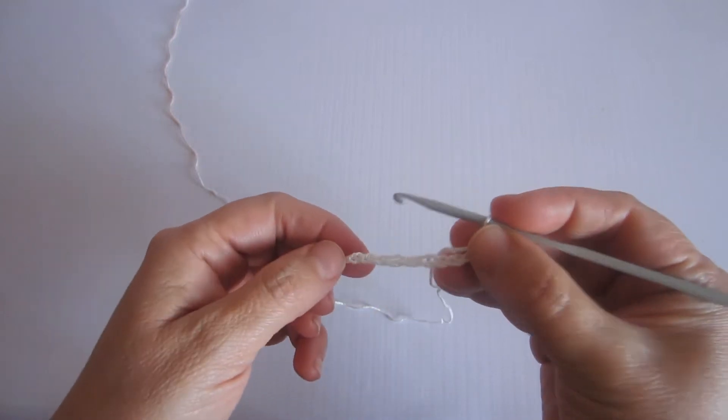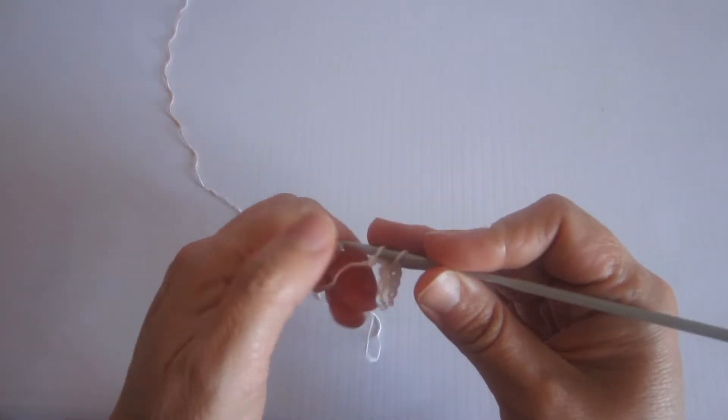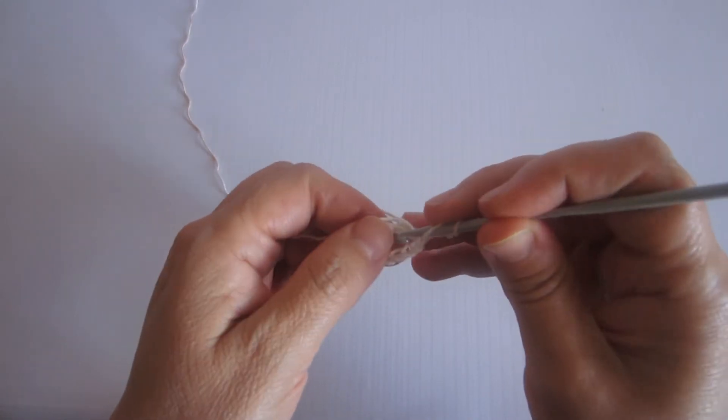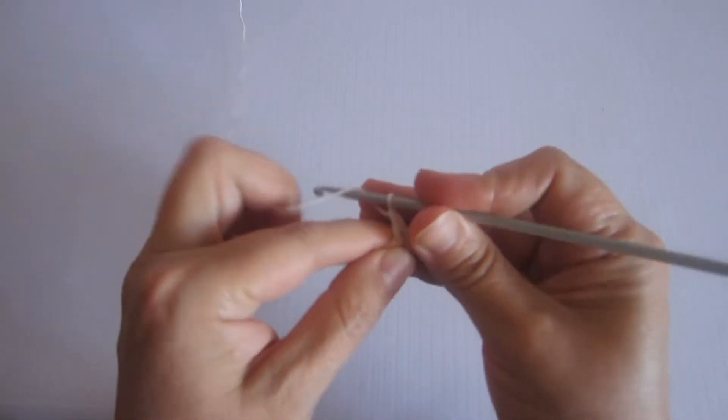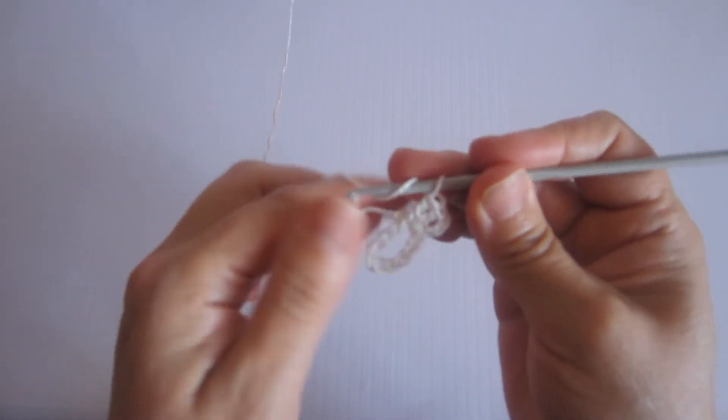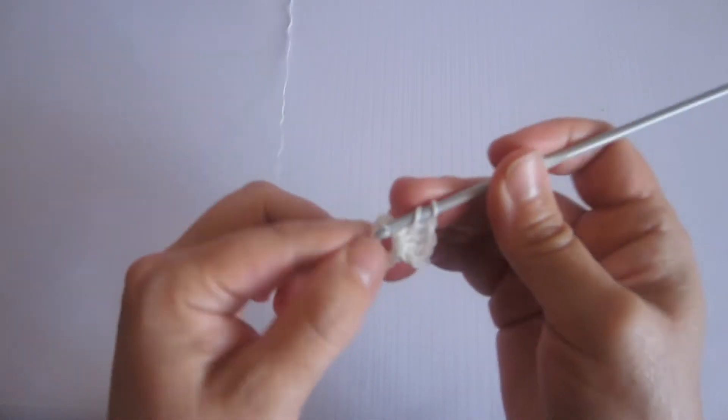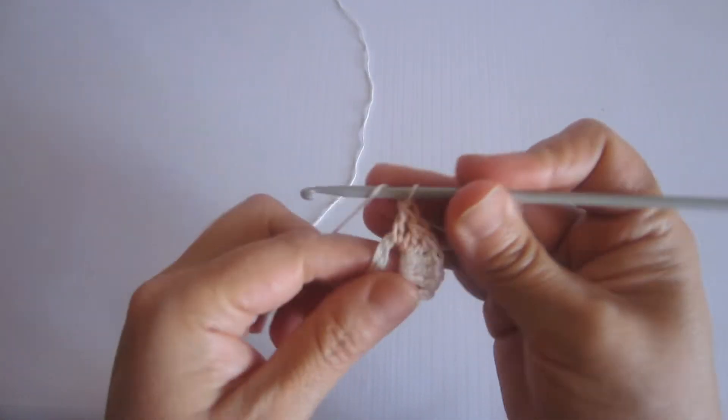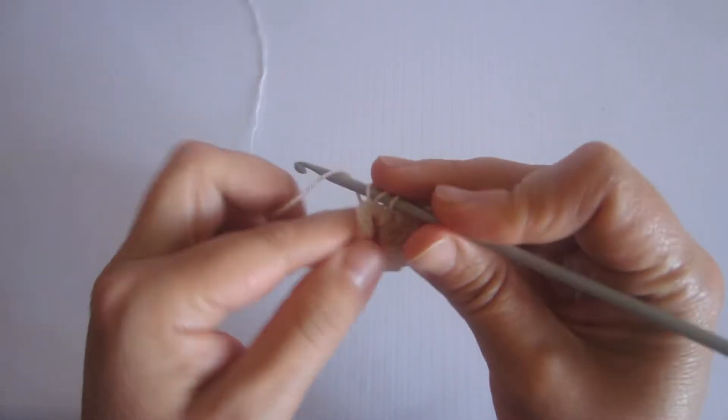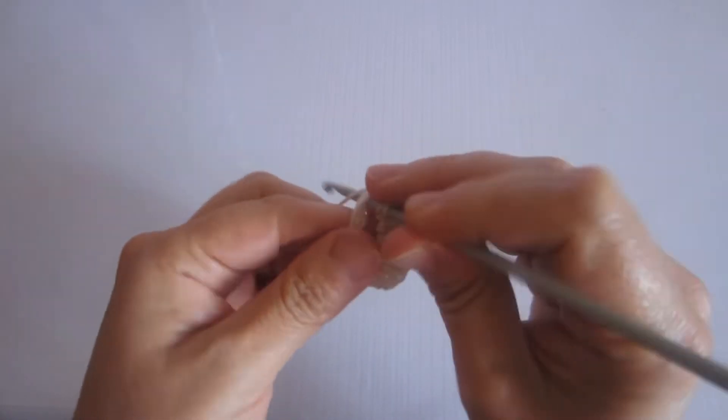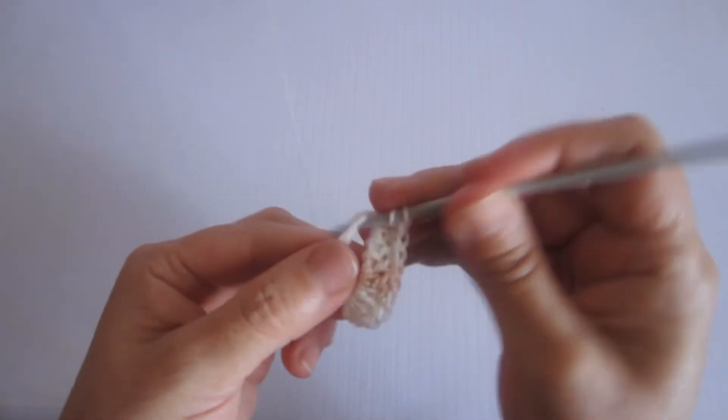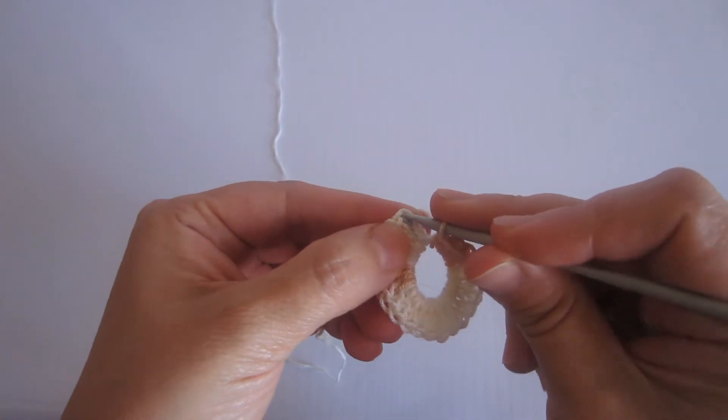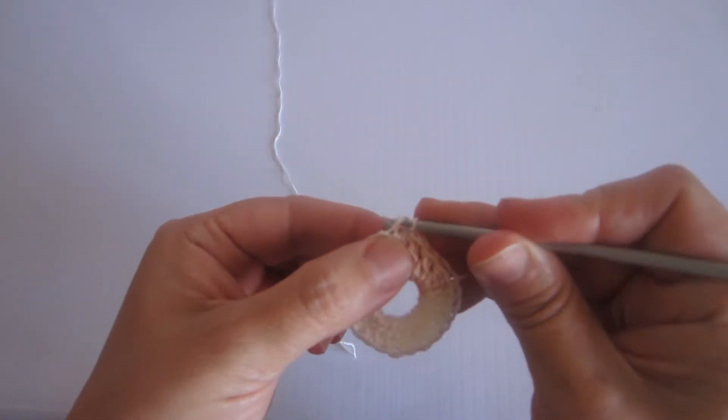Una vez que tenemos las 10 cadenitas, vamos a cerrar en la primera con punto deslizado. Subimos con 3 cadenitas que sería el primer punto y tejemos 23 puntos altos para completar 24 puntos. Una vez tejidos 24 puntos, voy a buscar la primera cadenita y cierro con punto deslizado.